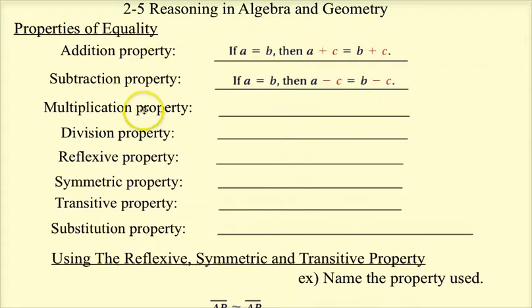I'll use these more than multiplication and division, but multiplication and division are very similar as well. Again, you're starting with A equals B. This time I'm going to multiply C to A and I'm going to multiply C to B, and those will also be equal to each other. So if A equals B, then A times C equals B times C.